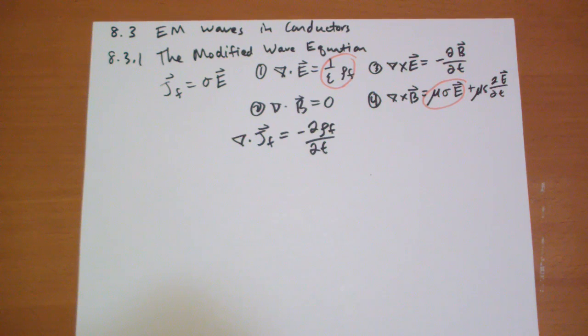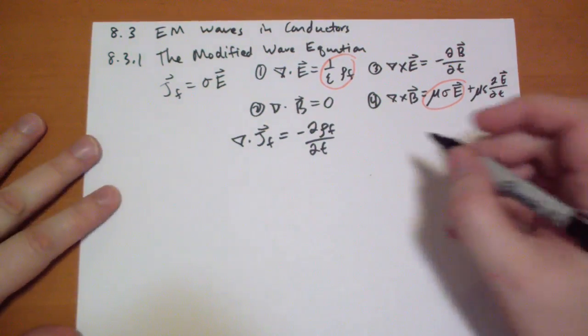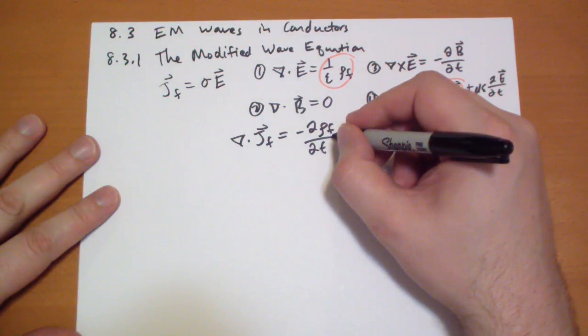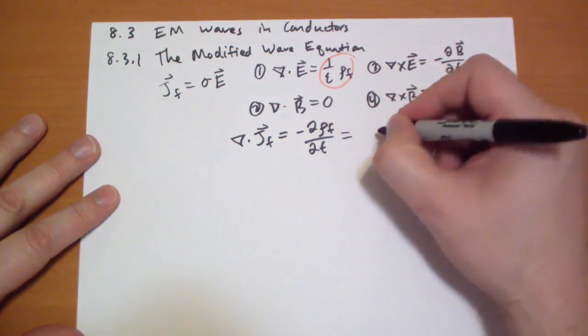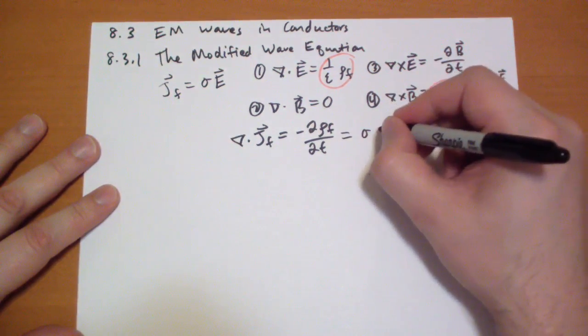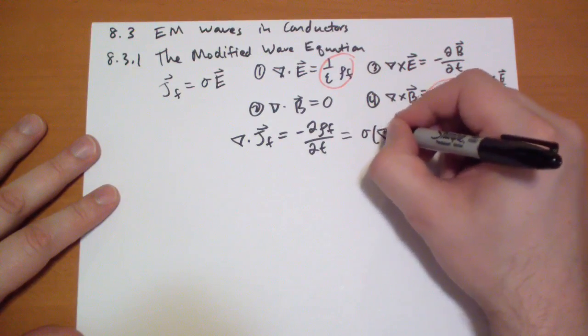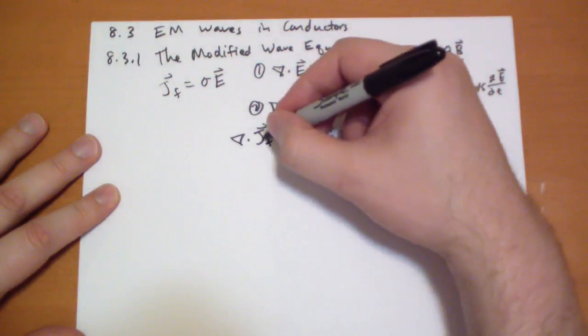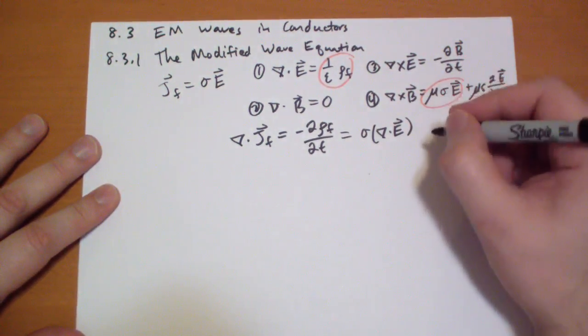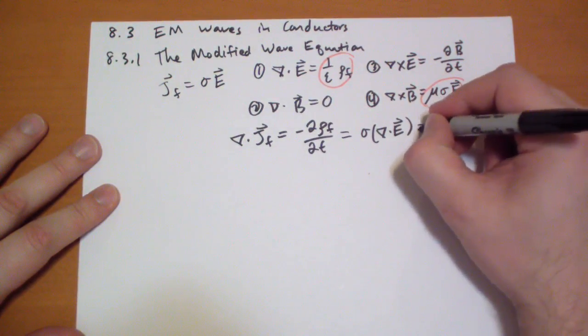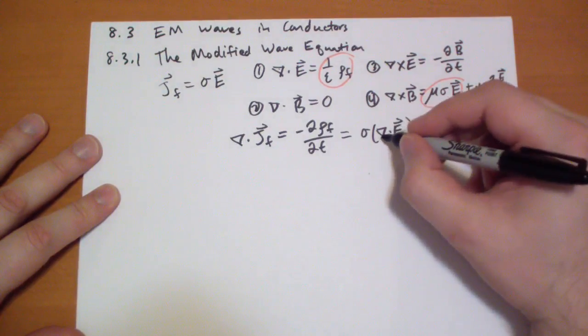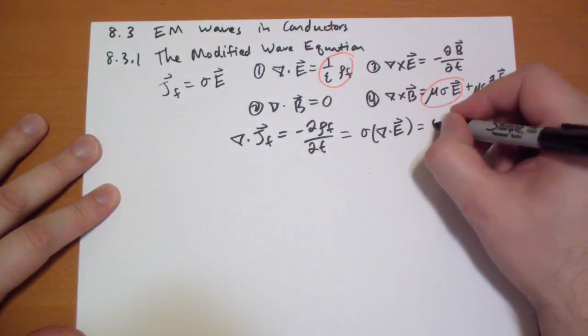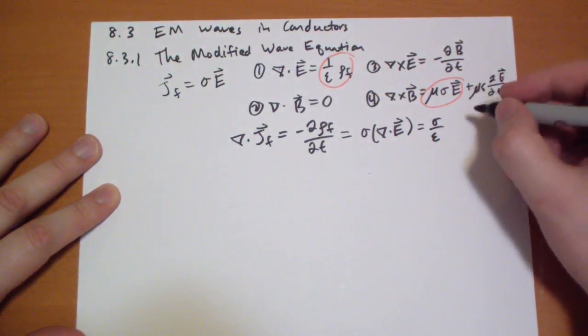When we combine this Ohm's law and Gauss's law together, we find that the time derivative of the charge is equal to sigma times the... Basically jf is sigma e, which this is that so we have sigma over epsilon rho f.